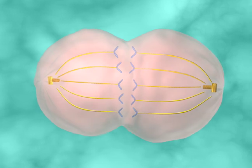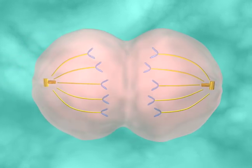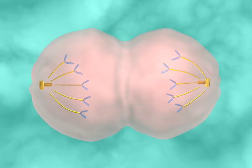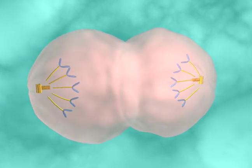The chromatids are pulled to opposite poles by depolymerizing microtubules. Chromosomes have now been successfully segregated, and the cell can finish division.